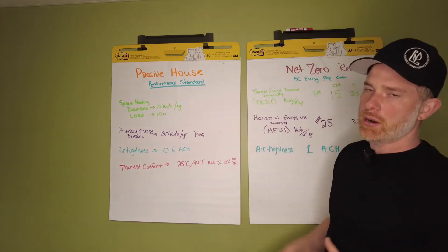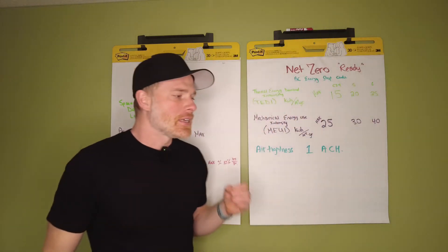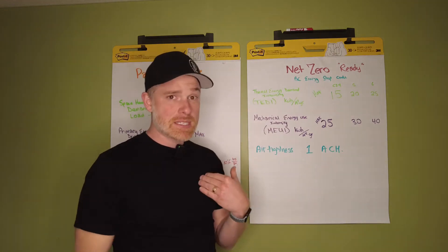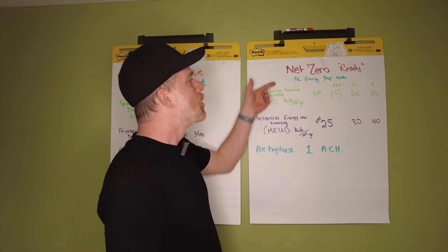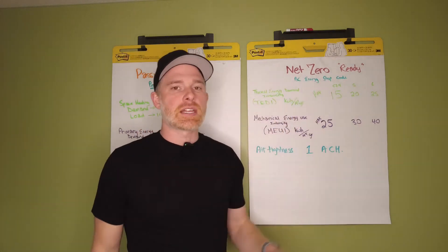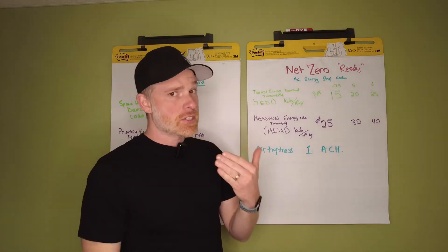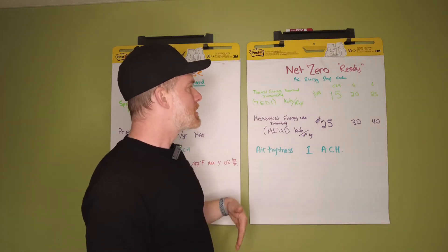Jumping over to Net Zero. Net Zero implies that your house generates as much energy as it uses. In BC and Canada, where we're from, we have a BC Energy Step Code. They want us to get to Step 5, which is Net Zero Ready. The province of British Columbia has outlined some criteria.